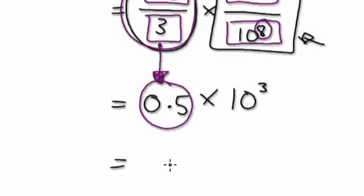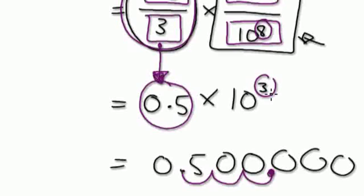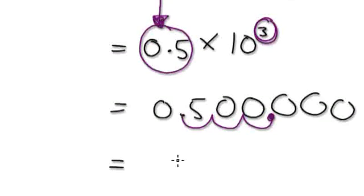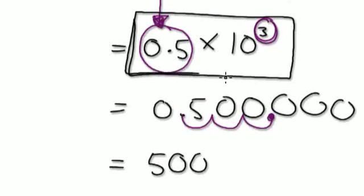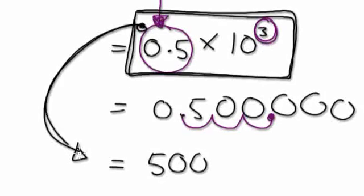So now we combine: 0.5 times 10 to the power of 3. In an earlier video, I asked you to master the technique of converting this directly. Given 0.5 times 10 to the power of 3, you move the decimal point 3 places, so the answer is 500. That's 500 seconds — the time it takes for light to travel from the Sun to Earth.